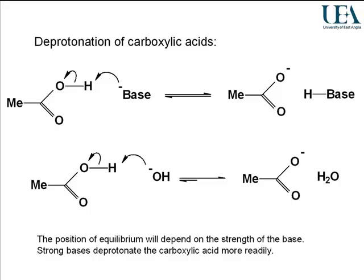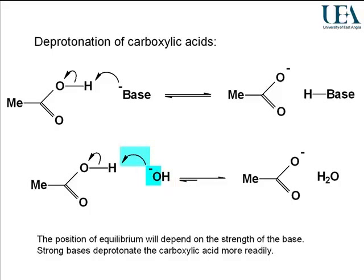Let's put a base in with this process. In general terms, we can write the mechanism as the base taking a pair of electrons to make a new bond and breaking the oxygen-hydrogen bond in the associated form of the acid. For a real example, here's today's typical base: hydroxide ion, deprotonating ethanoic acid. The oxygen is the source of the electrons; the curly arrows flow from the oxygen atom, pick off a hydrogen from the acid, break the oxygen-hydrogen bond, and put the electrons onto the heteroatom.